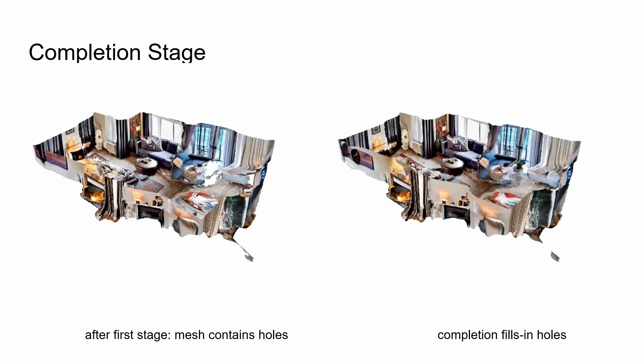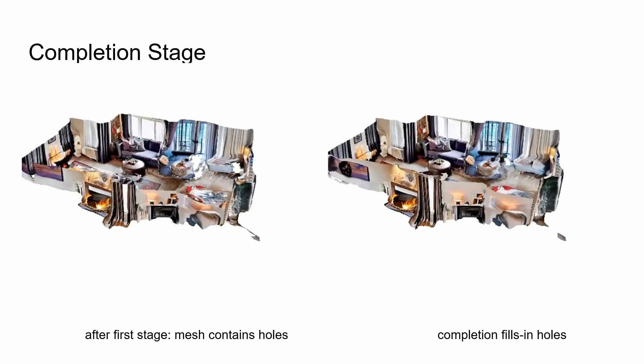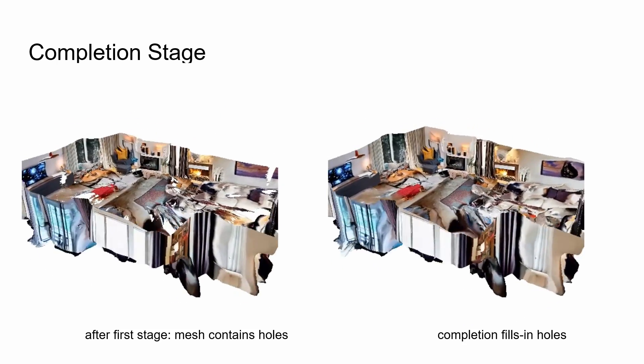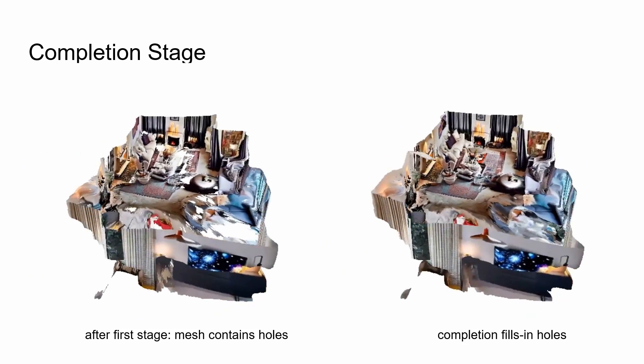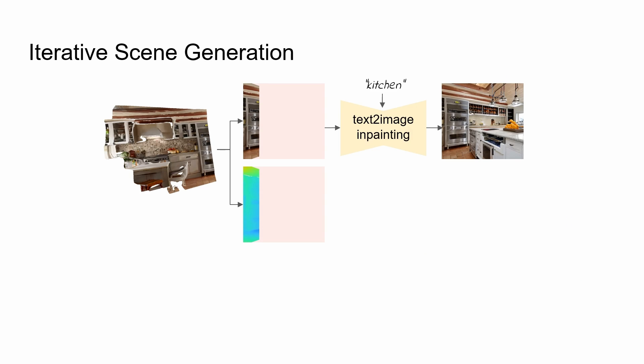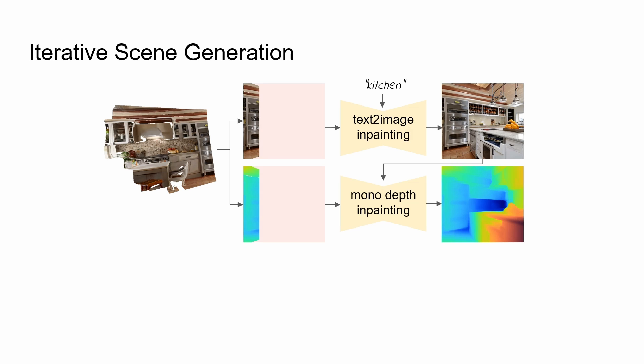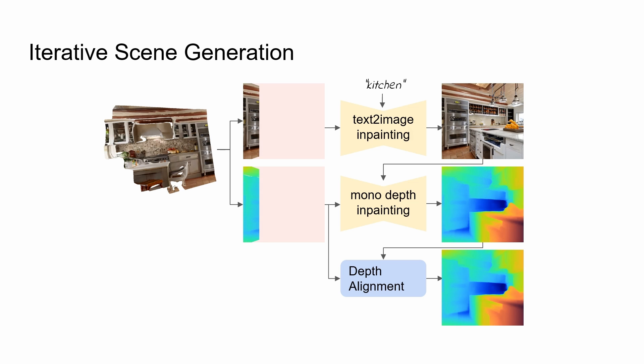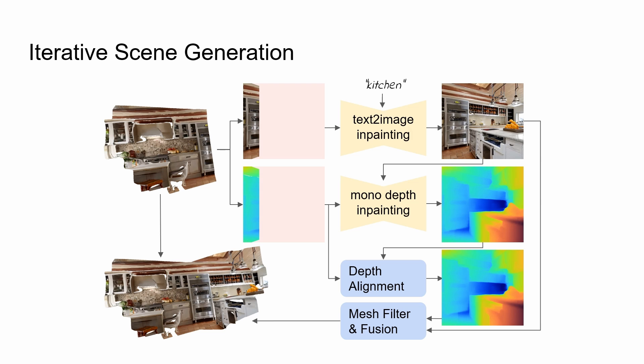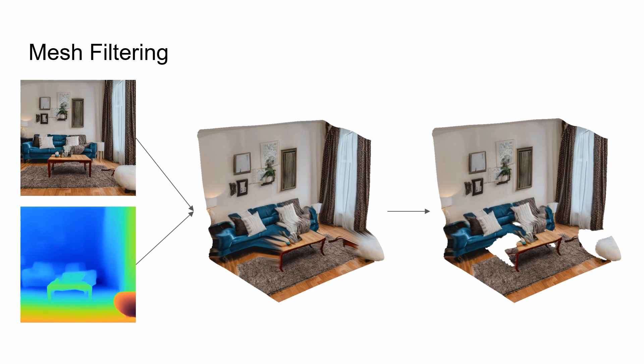The resulting scene contains multiple objects and structural elements like walls and floors. For each camera pose in both stages, we first render the current mesh, then inpaint the rendered RGB image with a text-to-image model. Next, we predict the depth for the generated content by using a depth inpainting network. We create smooth transitions from old to new content with an additional alignment step. Finally, we fuse the new content with the existing mesh. We filter stretched-out faces from the geometry, resulting in an undistorted mesh patch.